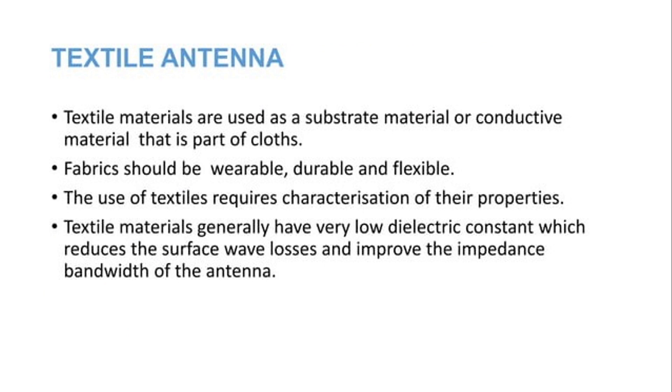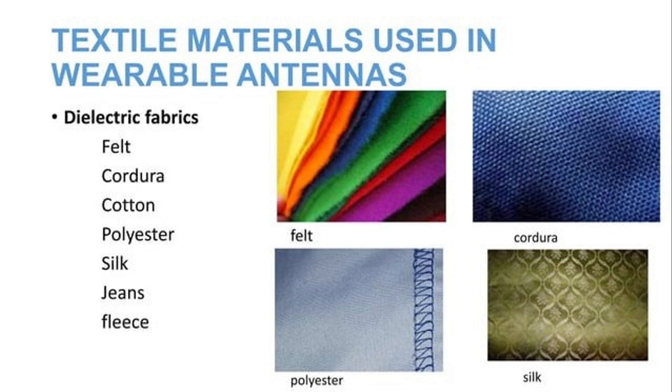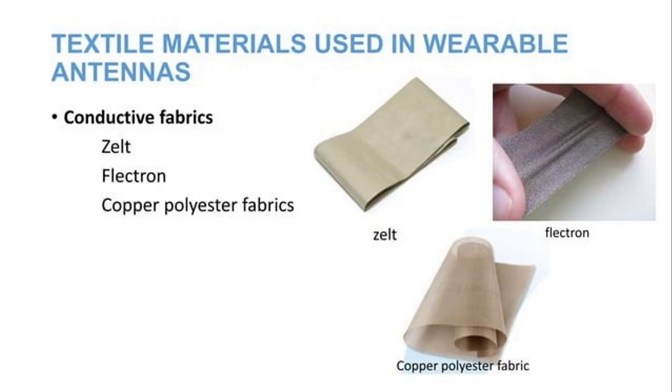The textile antenna. Textile materials are used as substrate material or conductive material that is parts of clothes. Fabric should be wearable, durable and also flexible. The use of textiles requires characterization of their properties. Textile materials generally have very low dielectric constant which reduces the surface wave losses and improve the impedance bandwidth of the antenna. Textile materials used in wearable antenna can be different types. Firstly, when we talk about dielectric fabrics, these can be felt, cordura, cotton, polyester, silk, jeans or fleece. In the project, we have used jeans as dielectric material. The material which we have used as conductive material is copper and the other conductive materials that can be used are zelt, electron and polyester fabrics of cotton.